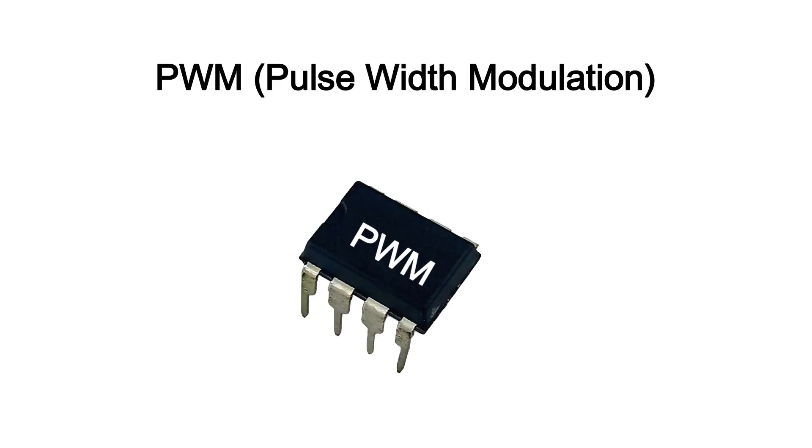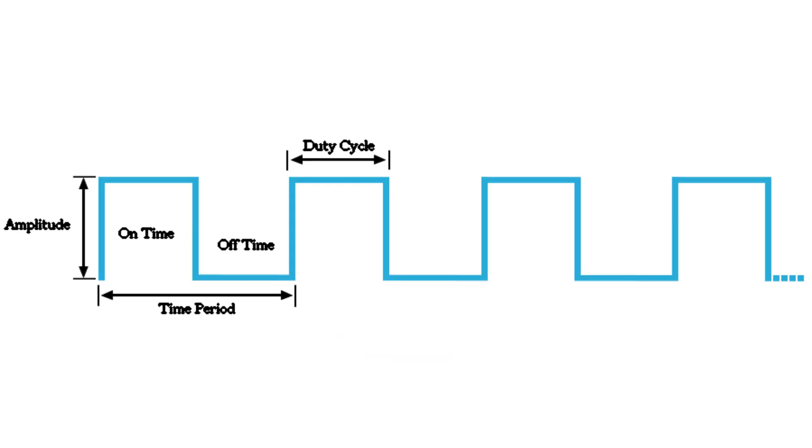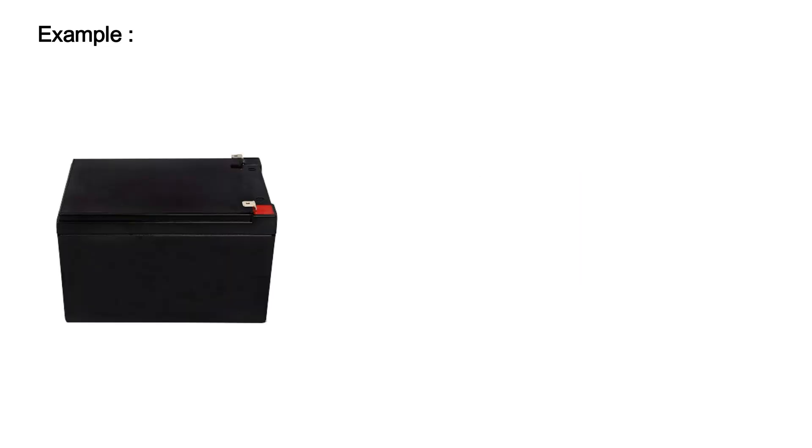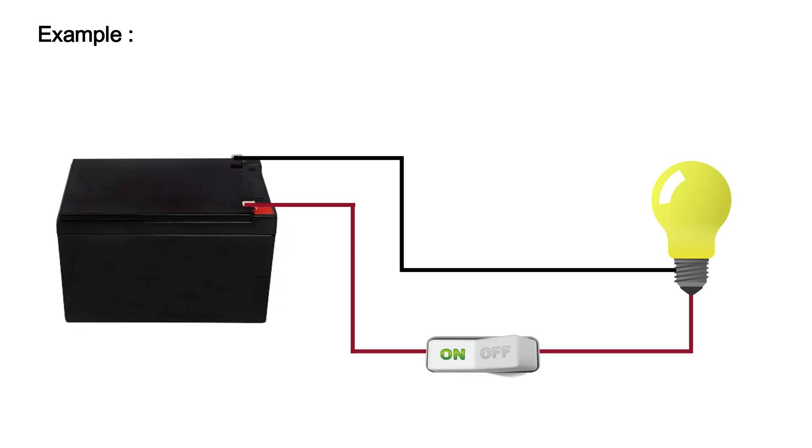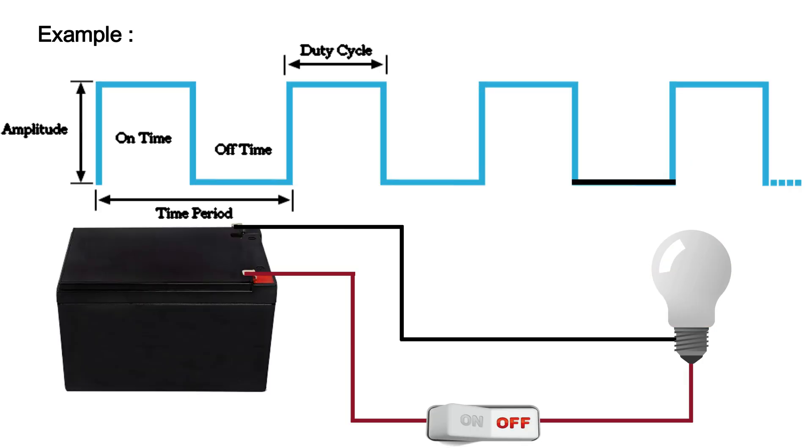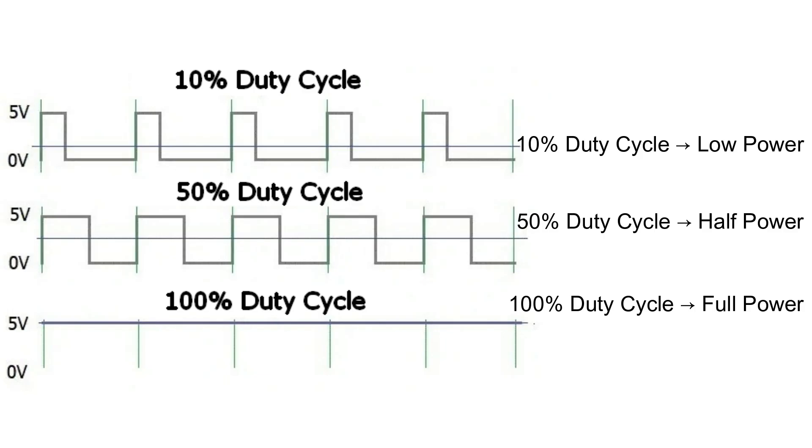What is PWM? PWM is a method used to control power without reducing voltage. Instead of lowering voltage, PWM switches the power on and off very fast. Simple example: Imagine a light bulb connected to a switch. If the switch is always on, the bulb is bright. If the switch is on and off very fast, the bulb looks dim. The bulb is not dim because of low voltage, it is dim because on-time is shorter. This on-time percentage is called duty cycle.